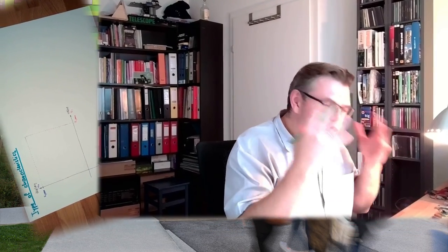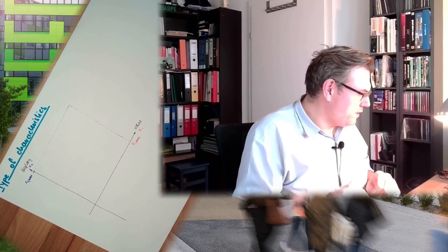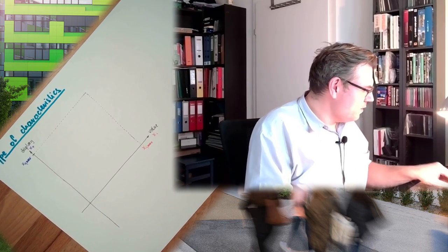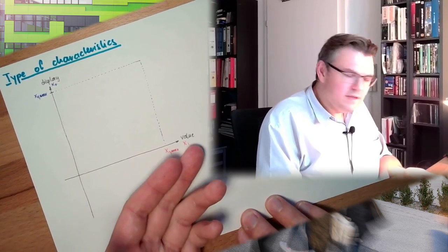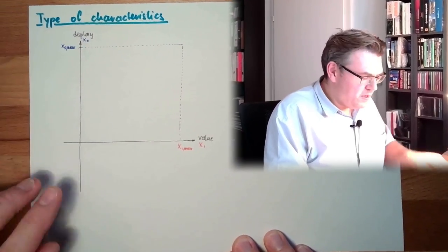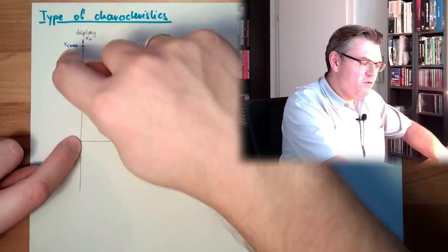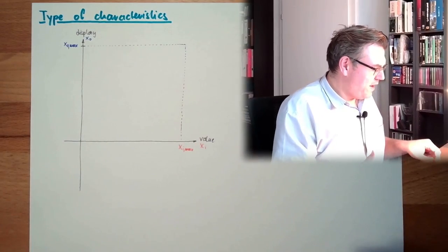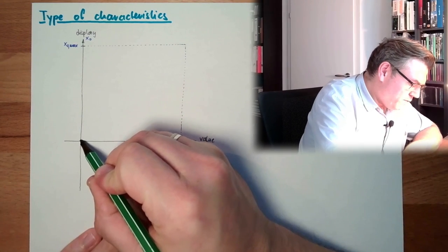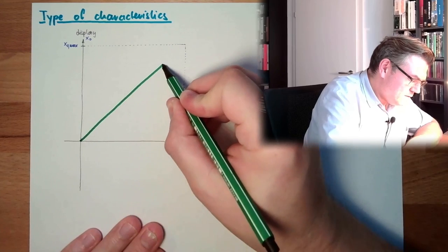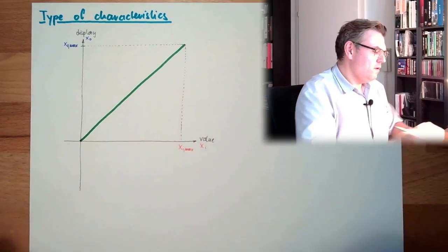So the most logical one. Here again I have drawn these characteristics. So there is an input, that's the value, there's an output, there's the display. So there's a measurement range and there's a display range, and if they are connected like that, there's a linear characteristic going from zero to max, like that, should be linear.